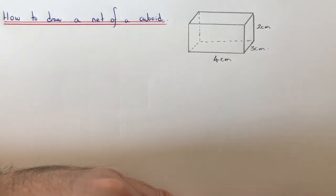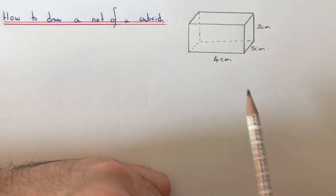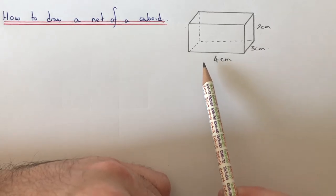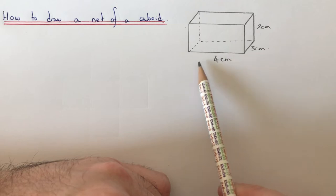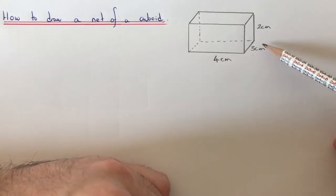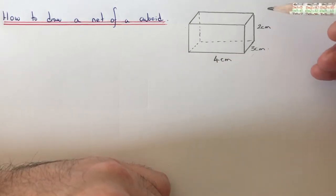Hi guys, welcome back. Today I'm going to show you how to draw a net of a cuboid. So we're going to have a go drawing this net of a cuboid of four centimeters length, three centimeters width, two centimeters is the height.